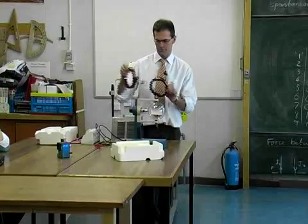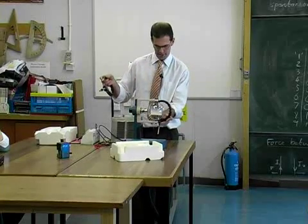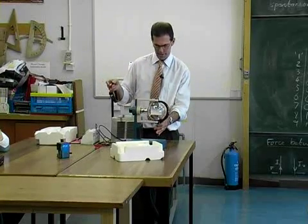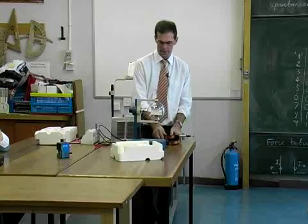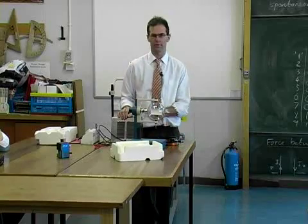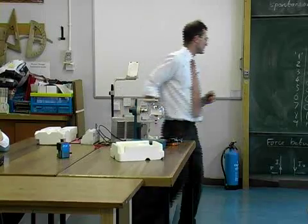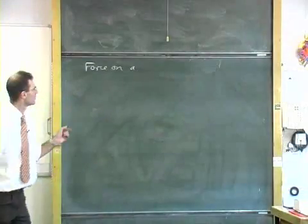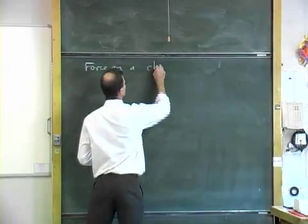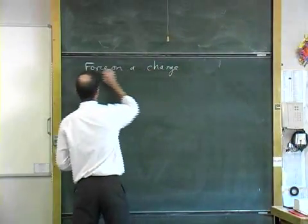We'll put the magnetic field on by these coils here, these Helmholtz coils, and we'll see what happens when the electron hits that magnetic field. But first of all, the theory. Let's have a think about really looking at what the force is just on an isolated charge moving in a magnetic field.